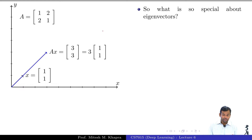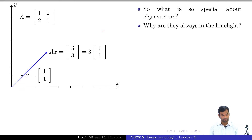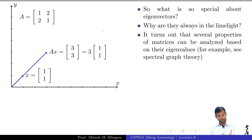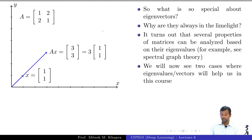What is so special about eigenvectors? In any course — machine learning, image processing, speech — you will always encounter eigenvalues and eigenvectors. This is because several properties of matrices can actually be explained by looking at their eigenvalues. There is an entire field called spectral graph theory that looks at properties of Laplacian matrices. In this course there are specific things we care about with respect to eigenvalues and eigenvectors, and that is what this lecture is about.